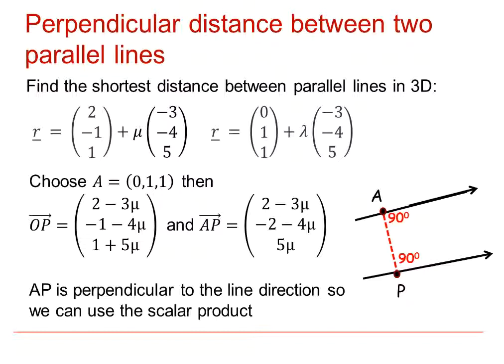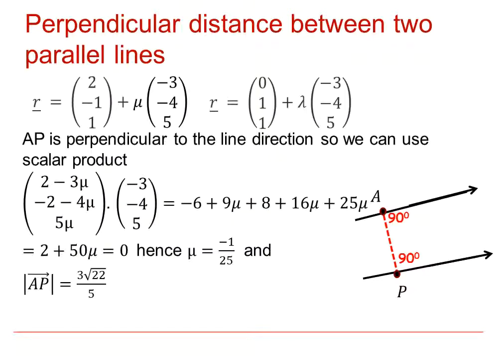Here we are dotting the displacement vector from A to P with the direction vector of the first line, knowing that they are perpendicular to each other, and therefore the scalar product must equal zero. This gives us a value for the parameter.